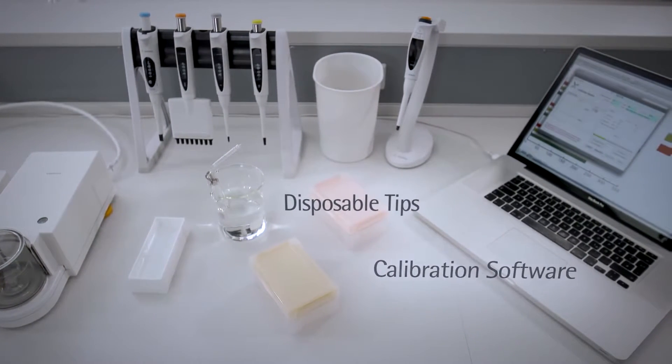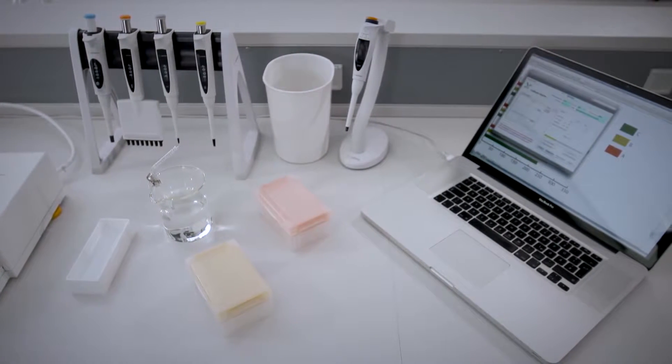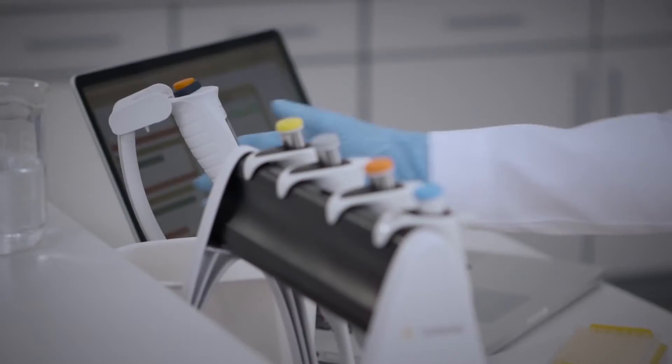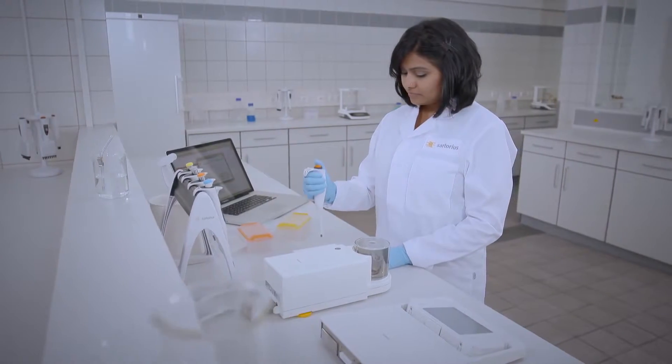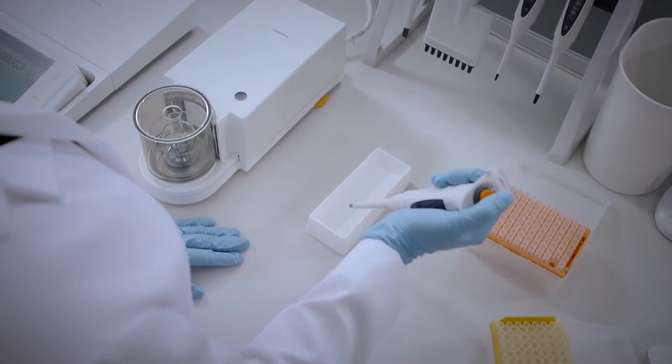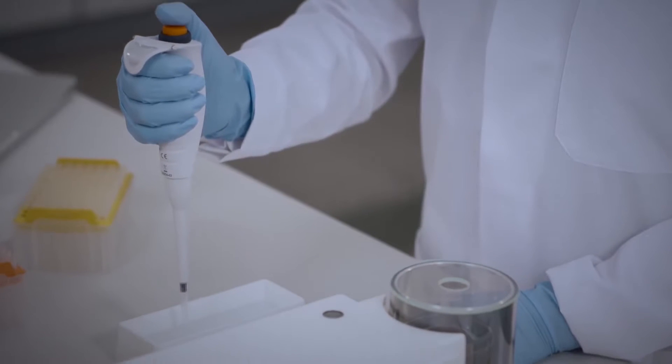Besides the equipment, the procedures are also important for the reliability of calibration results. First of all, it's important to pre-wet the pipette three to five times before starting the calibration to eliminate evaporation of the water into the airspace inside the pipette.